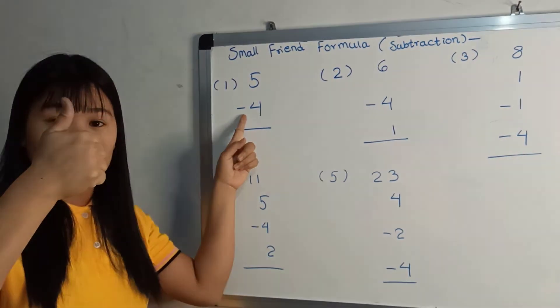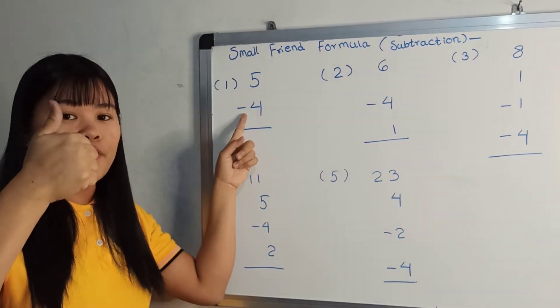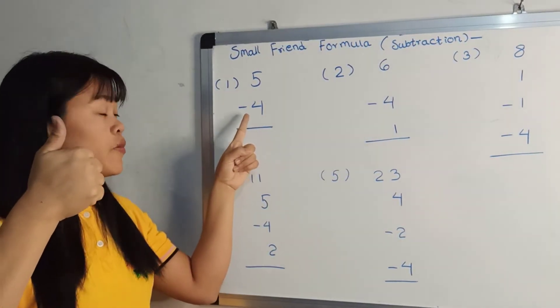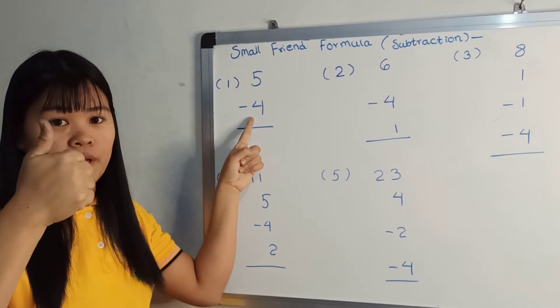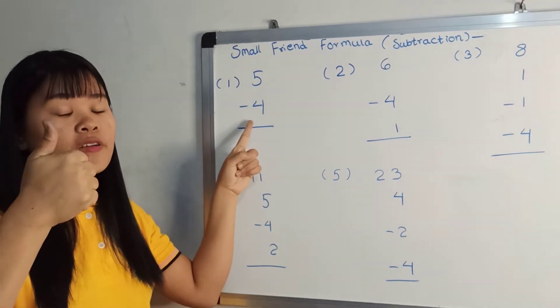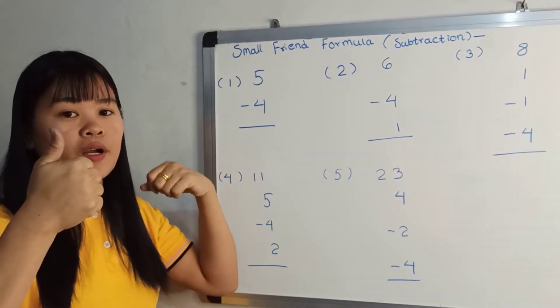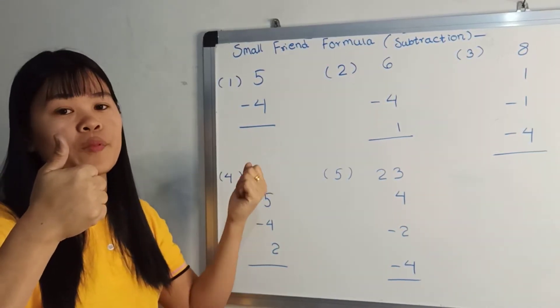So, we have 3 and 4. We have 4. So, you have a formula. So, if you like this, you will be 4 to the left.